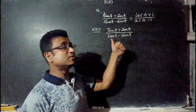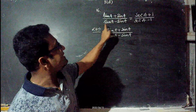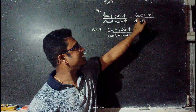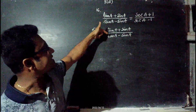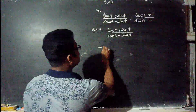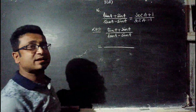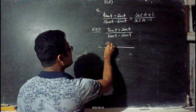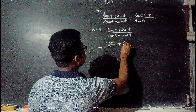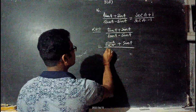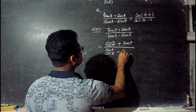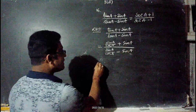Question number 16: prove (tanA + sinA)/(tanA - sinA) = (secA + 1)/(secA - 1). Starting from the left hand side, express tanA in terms of sine and cos: tanA = sinA/cosA. So numerator becomes sinA/cosA + sinA and denominator becomes sinA/cosA - sinA.